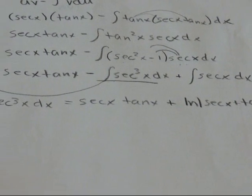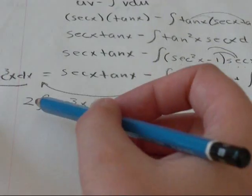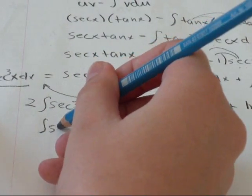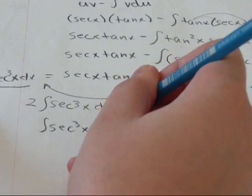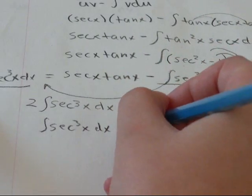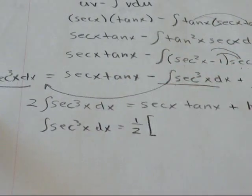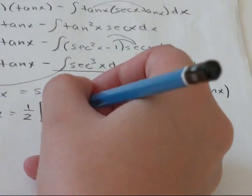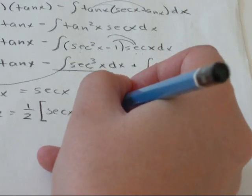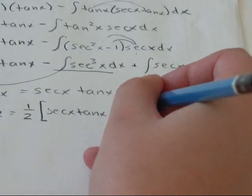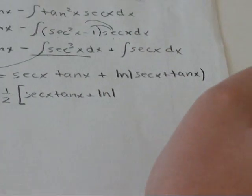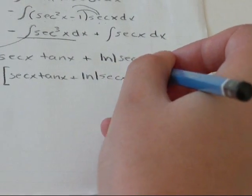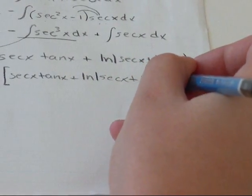The log of secant x plus tan x. So we're going to get rid of this 2. We're just going to have 1 times the integral secant cubed x dx equals 1 half of what we have on this side.